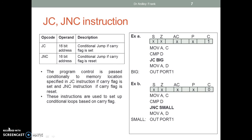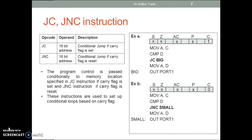Example A: JC jumps to label 'big' if the carry flag is set. Example B: JNC jumps to label 'small' if the carry flag is reset.